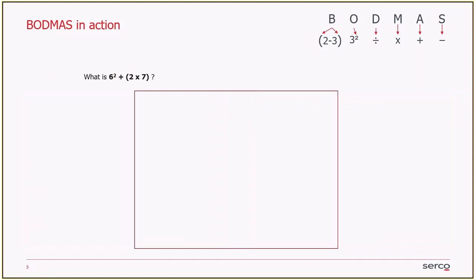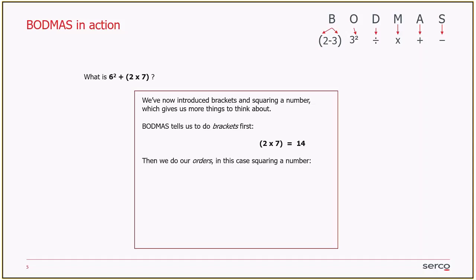A harder example - let's put some indices or squaring in and also put some brackets in. We've got 6 squared, that little 2 means squared, add 2 times 7, and our 2 times 7 is in brackets. Thinking of BODMAS again, BODMAS tells us to do the brackets first. So 2 times 7 is 14. We then have to do our orders.